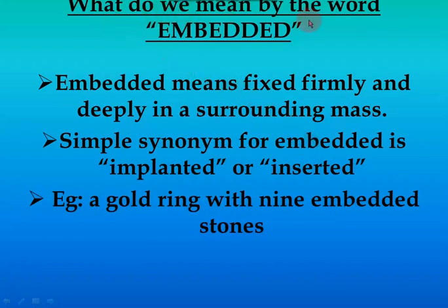What do we mean by the word embedded? Simply, embedded means fixed firmly and deeply in a surrounding mass. The easiest synonym for embedded is 'implanted' or 'inserted.' Embedded means to fix something deeply. To apply it to the electronic stream: when we consider an integrated chip or an IC board, we implant all the processors, communication ports, and memory — all these little things into the chip, as we learned in VLSI. So embedded simply means to insert something into a bigger stream.